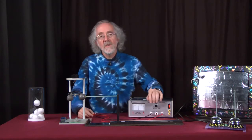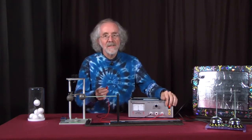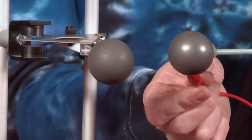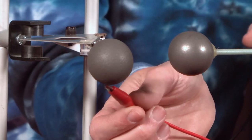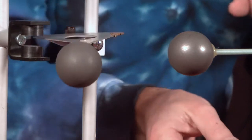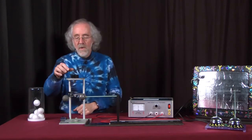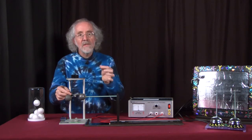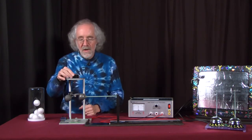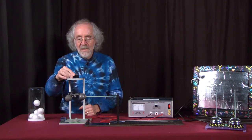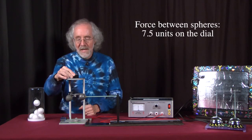Well, the force is proportional to the product of the magnitude of the two charges. And so if each of the charges is one half what it was before, the force is proportional to one half Q times one half Q, one quarter what it was before. And so we'd predict a force of 7.5 to bring them back into balance.